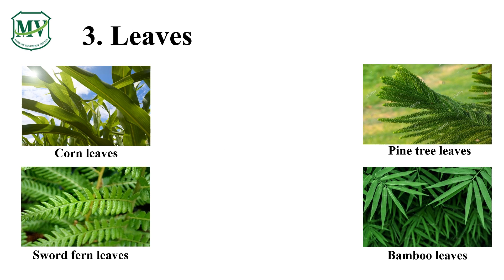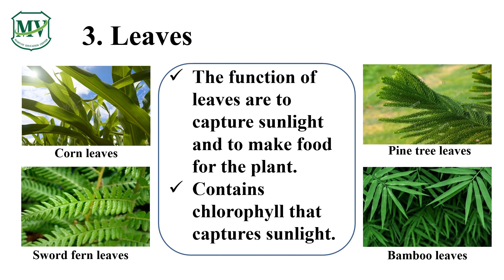What have we learned so far? We have learned that plants have roots and stem that function in a specific way. Now let's learn about the function of the leaves. Leaves are usually green because of the chlorophyll, which captures sunlight and allows the plants to make their food during photosynthesis. Leaves also come in different sizes and shapes.